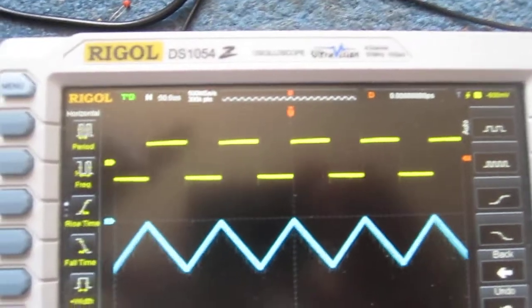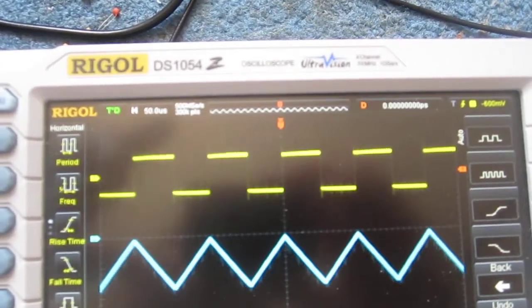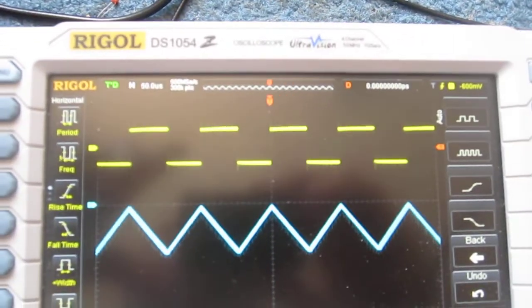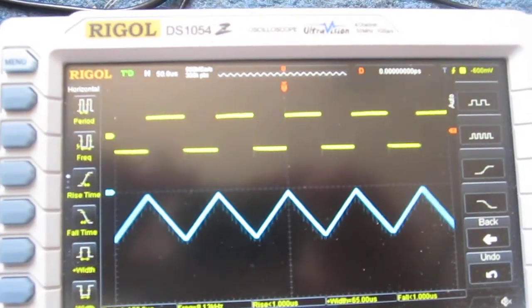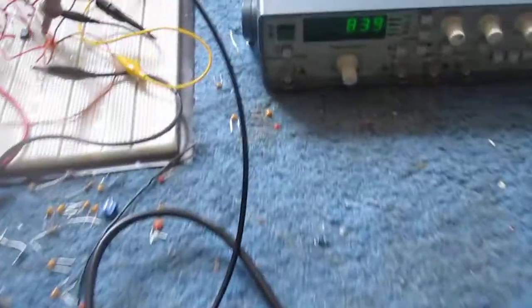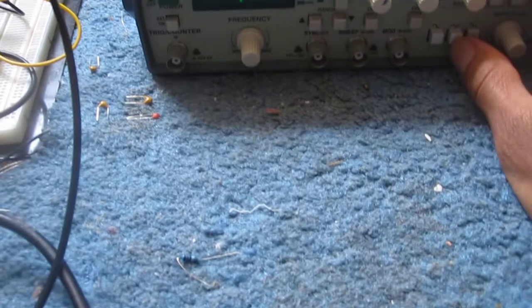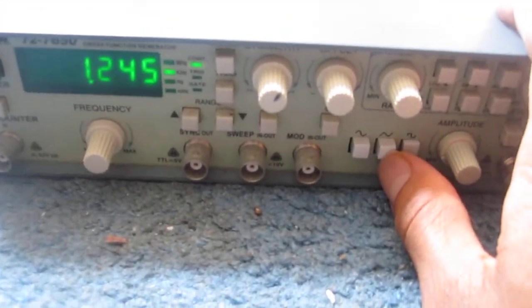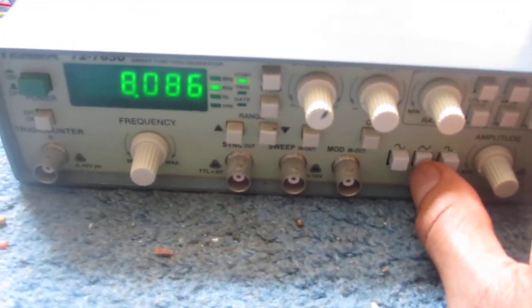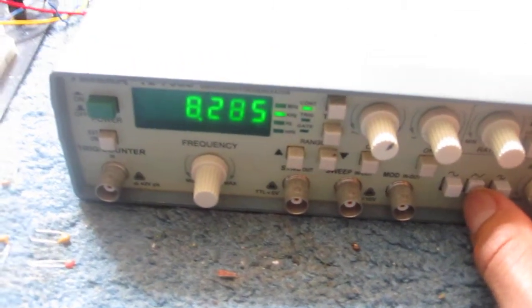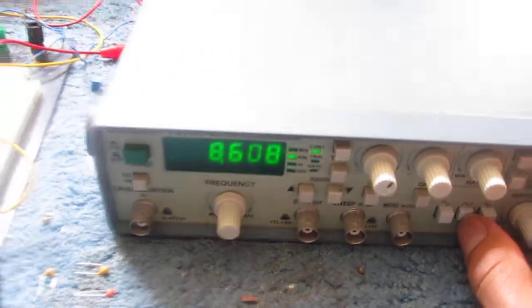So again, if you feed a square wave into an integrator circuit, you should get a triangle wave at the output. And if I switch this now so that I have a triangle wave input into the circuit, the frequency jumps to about 8k Hertz.